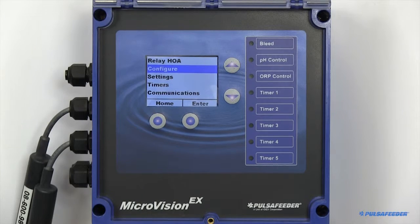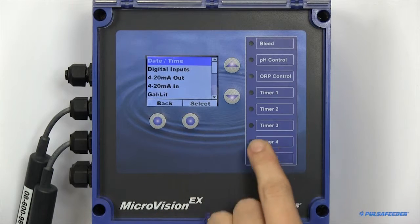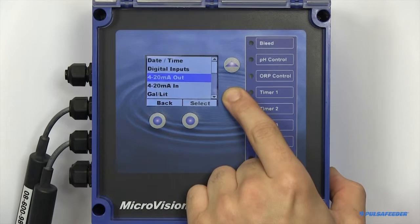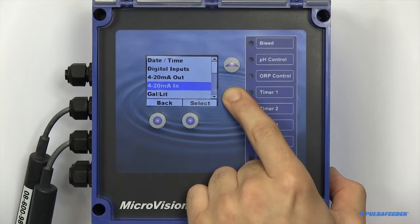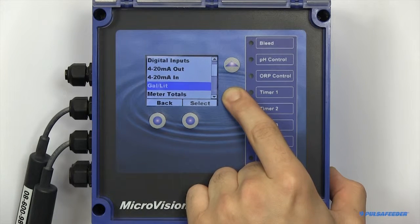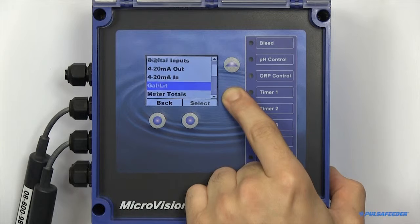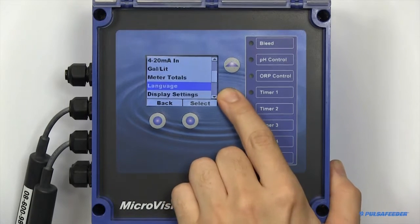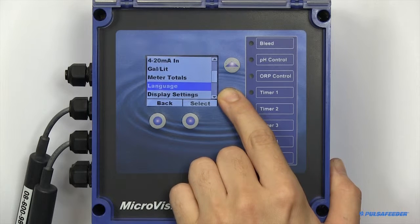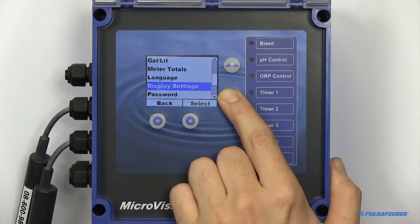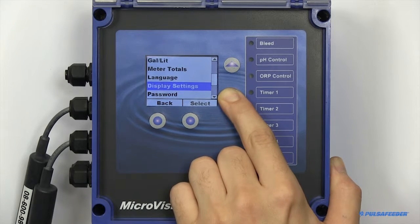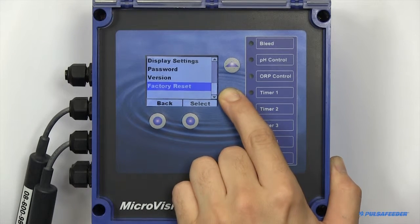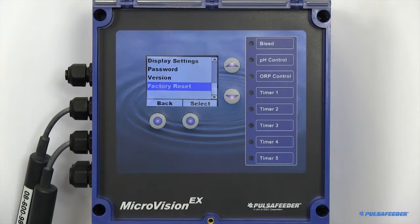The Configure menu is where you can access your date and time settings, adjust your digital inputs, enable or disable your 4-20 milliamp in and output functions, adjust your units, reset meter totals, change the language of the unit, configure display settings, enable software passwords, view the version of the software, as well as initialize a factory reset.